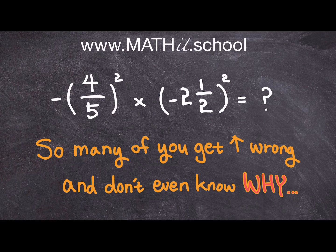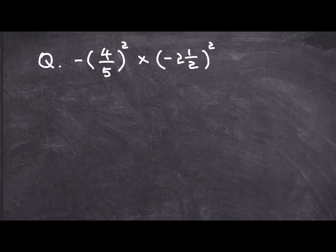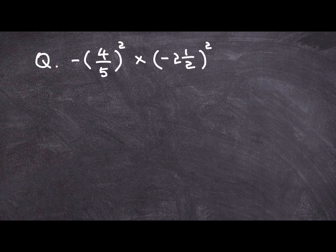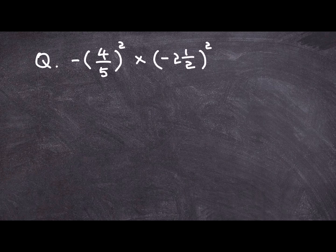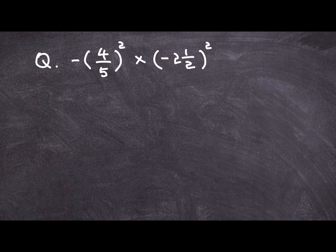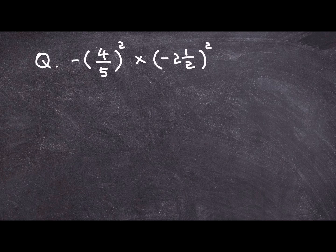So without further ado, let's go ahead and solve this problem. Here I have negative parenthesis 4 over 5 parenthesis squared, multiplied by parenthesis, and this time the negative sign is within the parenthesis, 2 and 1 half, and then parenthesis is closed and it's squared. So let's go ahead and solve this.